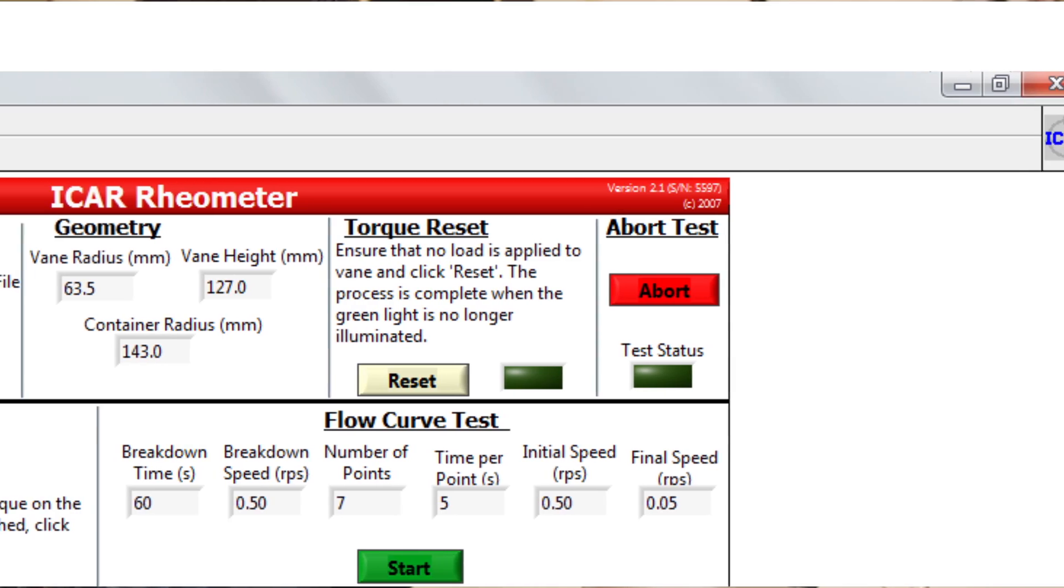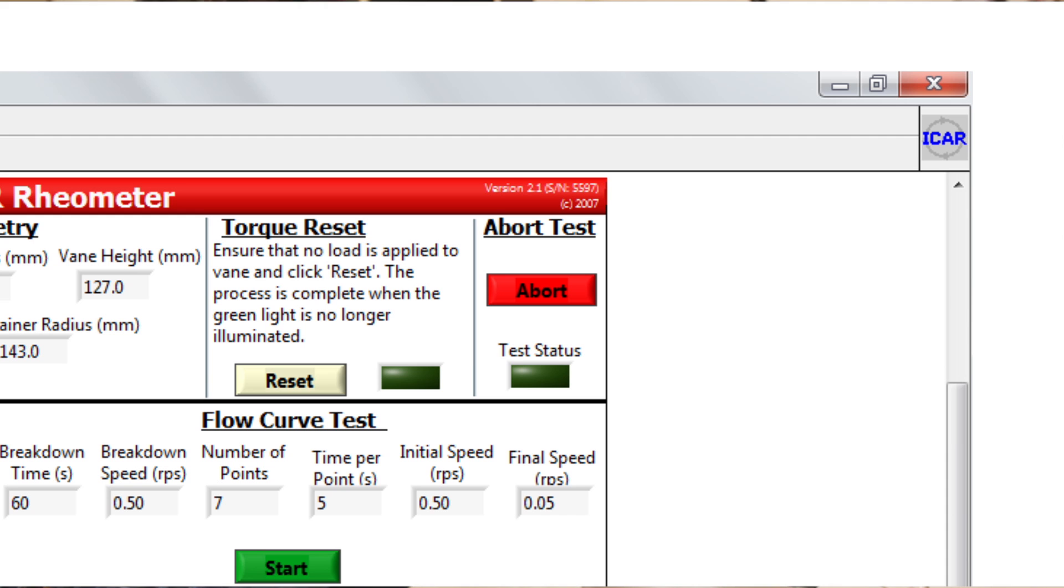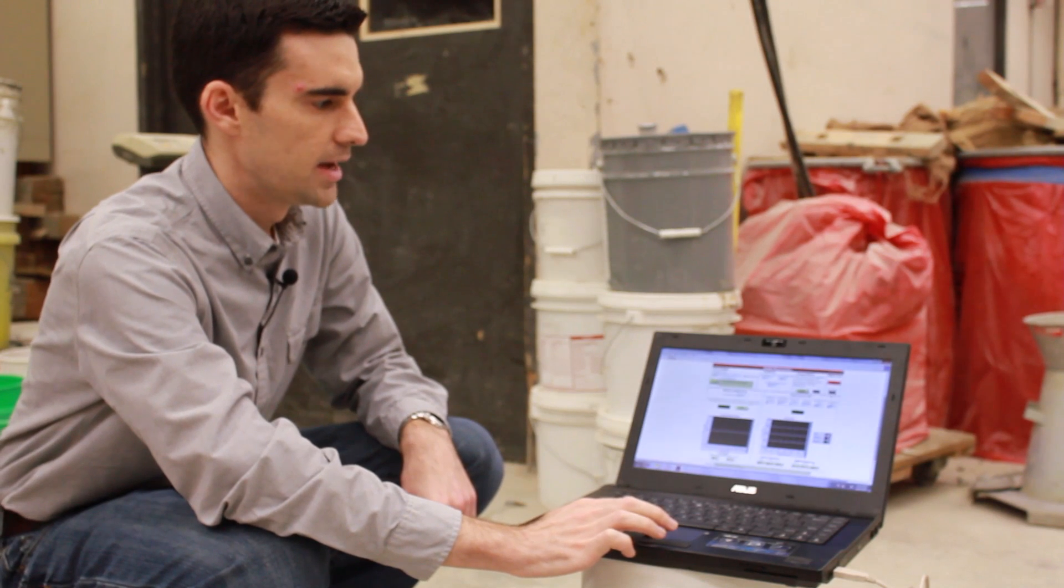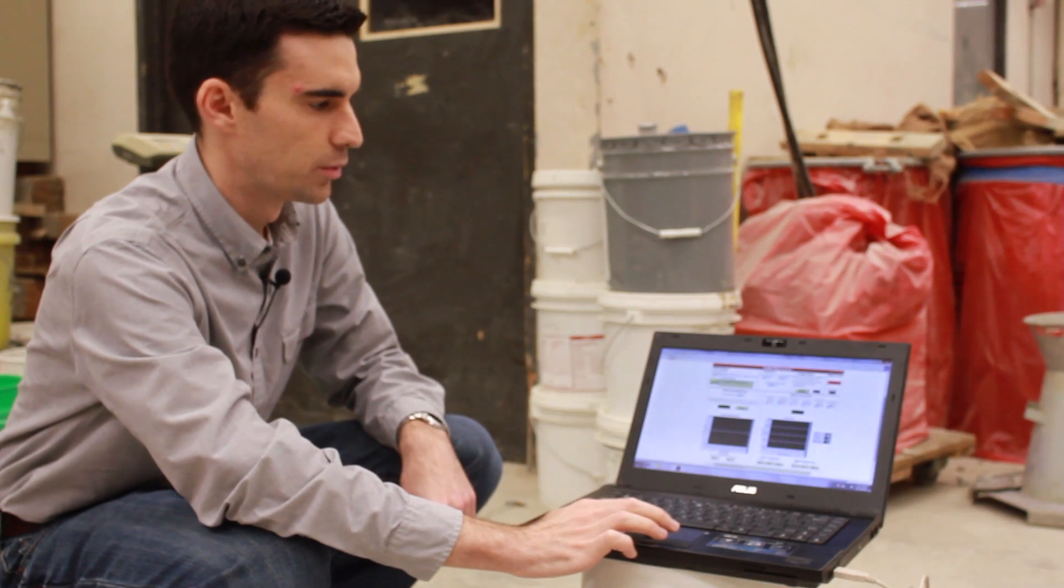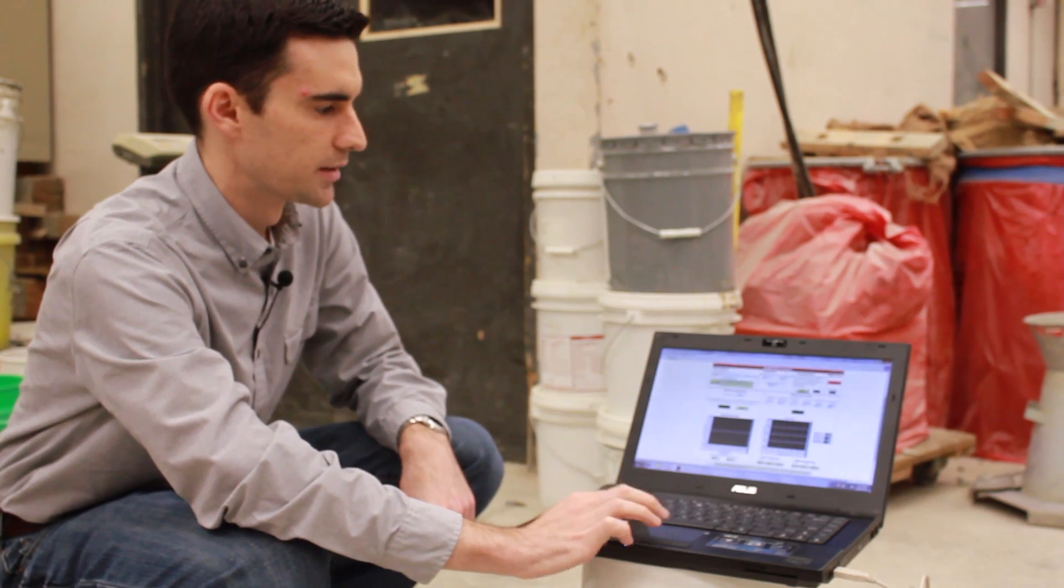The other option across the top here is the abort test, which lets us stop the test in progress if we ever need to. And you also see the green test status light here, which illuminates whenever the test is in progress.